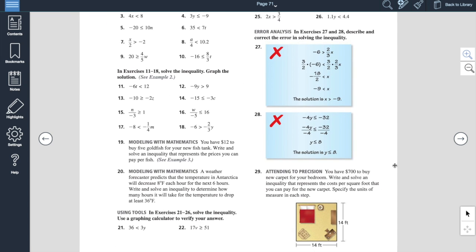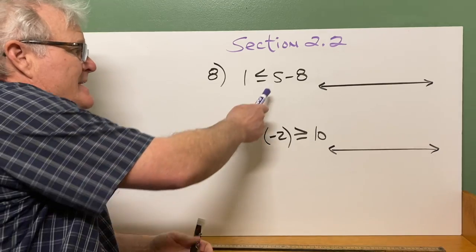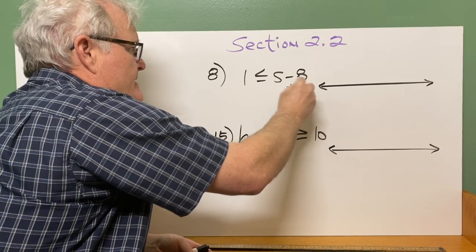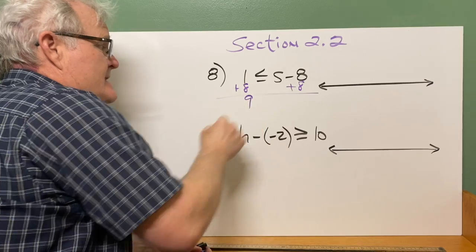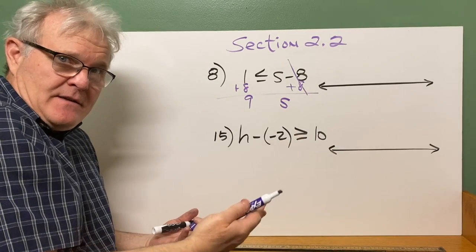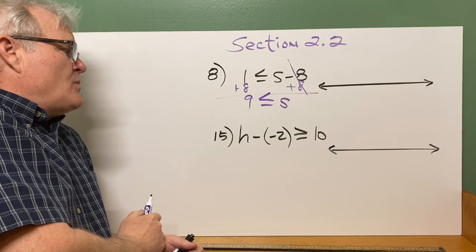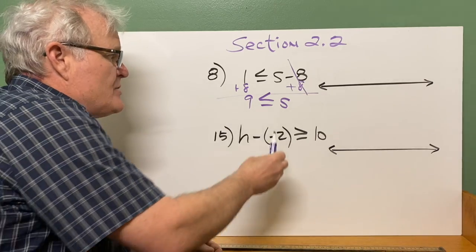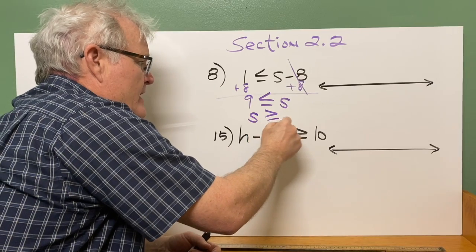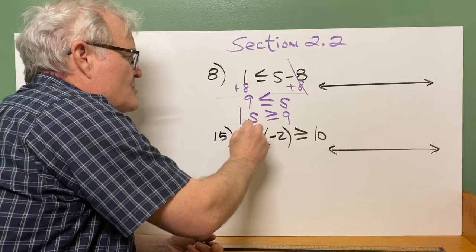I'm going to give you some problems on the whiteboard. If you were given something like S minus 8 is less than or equal to 1, remember the goal is to isolate the variable. In order to solve for S, I need to get rid of that minus 8 — so add 8 to each side of your inequality. 1 plus 8 gives us 9; the 8s cancel on the other side, leaving S. The inequality sign stays the same because all you did was add. So we get 9 is less than or equal to S — but remember, you always want to write your variable first. If I rewrite this, S is greater than or equal to 9. Notice how the inequality arrow points to the 9 here and it's also got to point to the 9 there.